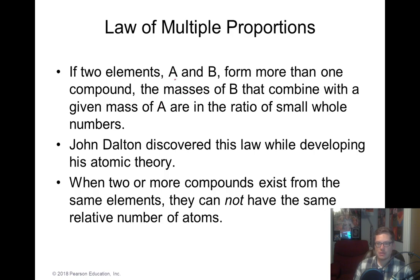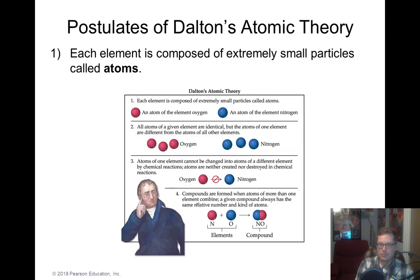Last law, Dalton actually discovered himself. He says that if two elements A and B form more than one compound, the masses of B that combine with a given mass of A are in ratio of small whole numbers. So essentially, he's just saying if you have A and B and you're going to stick those guys together, they all have to go in a ratio of small whole numbers. You can't have like H1.20. It's always got to be a small whole number, like H2O or CO2. So when two or more compounds exist of the same elements, they cannot have the same relative number of atoms.